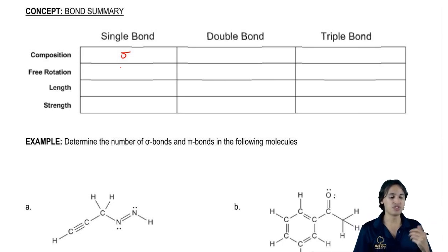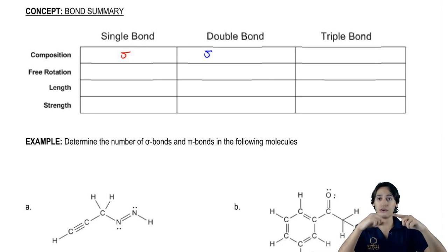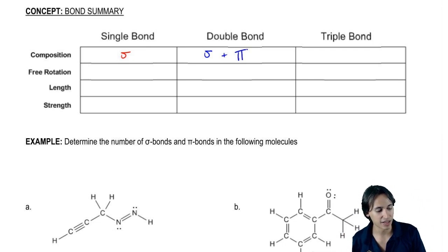Now double and triple get a little bit more complicated because it's actually more than one orbital combining. For a double bond, it's actually going to be one sigma, as always, because there's still one region of overlap in the middle from the s orbitals. But there are also these p orbitals.